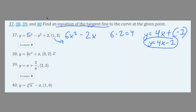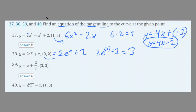Number 38: y = 2e^x + x. Derivative: 2e^x + 1. Plug in x = 0: 2e^0 + 1 = 2(1) + 1 = 3. So the slope is 3. The line goes through (0, 2), so the tangent line equation is y = 3x + 2.